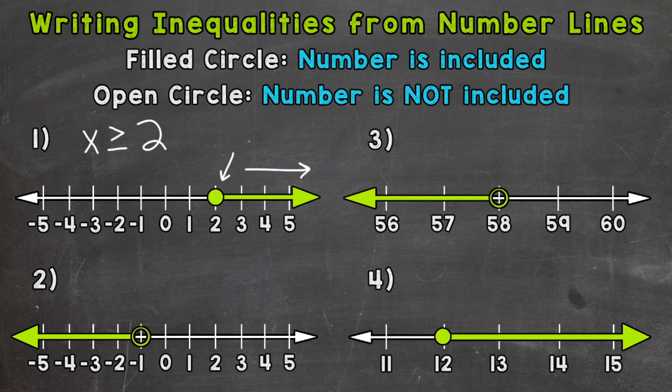You can also write that inequality starting with two and saying two is less than or equal to x. Both of those inequalities mean the same thing — the order is just different. One has x first and the other has two first, but they are both saying the same thing and represented by the same graph on a number line.